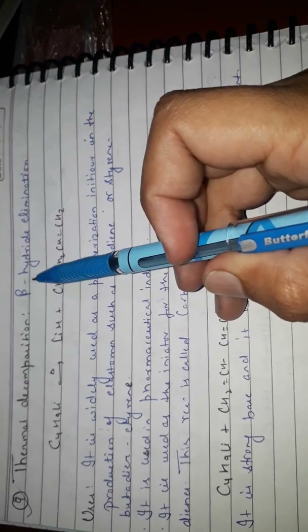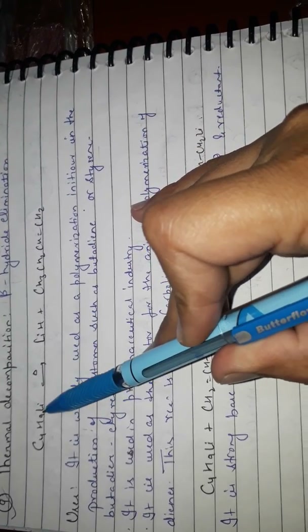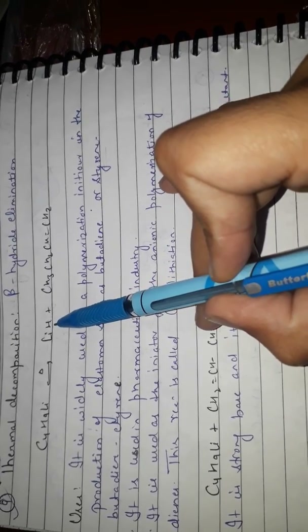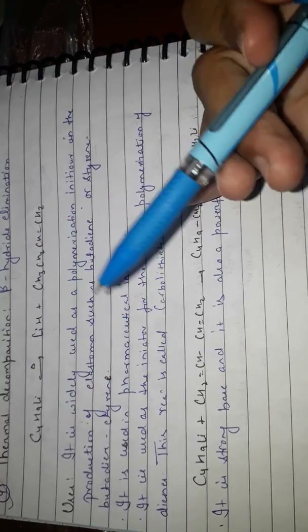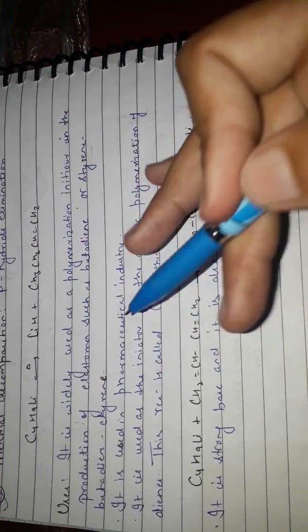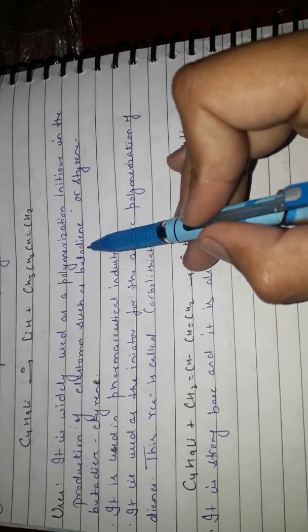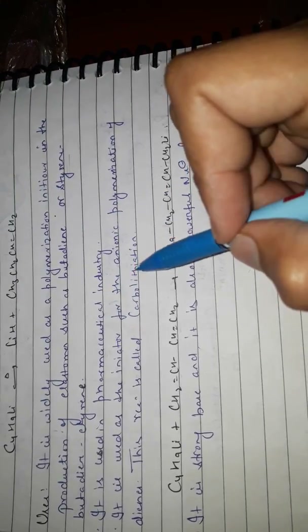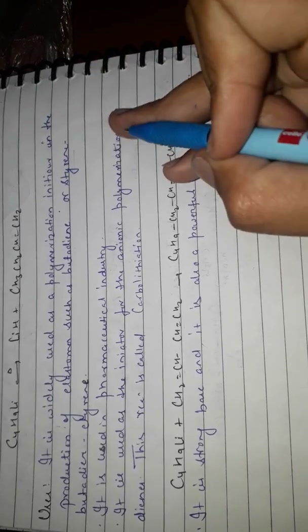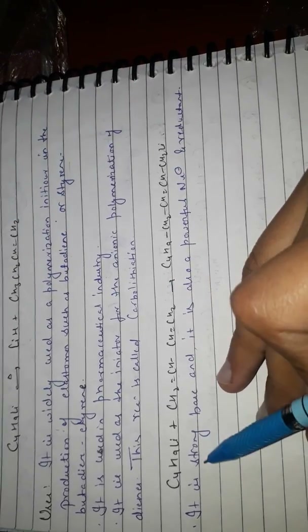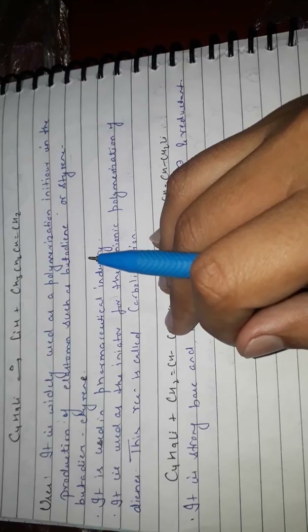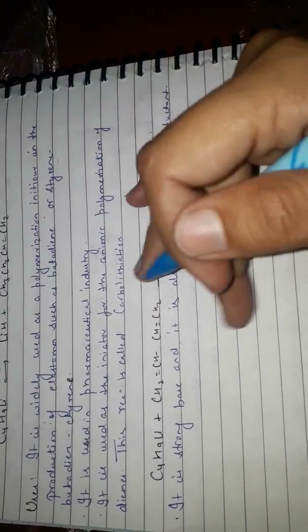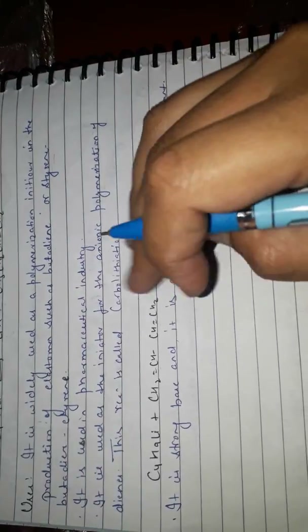Thermal decomposition: on thermal decomposition, n-butyl lithium gives lithium hydride plus an alkene. Uses of n-butyl lithium: it is used as an initiator for production of elastomers such as butadiene-styrene or ethylene copolymers, used in pharmaceutical industries, and as an initiator for anionic polymerization. It is also a strong base and a powerful nucleophile and reductant. Please like, share, and subscribe, and comment if you have any doubts.